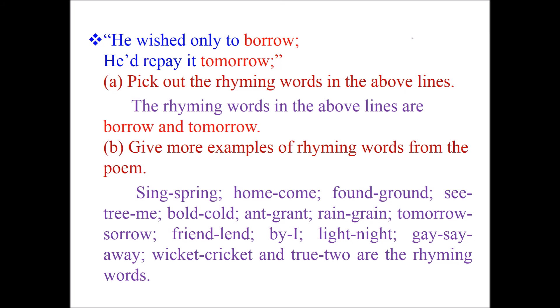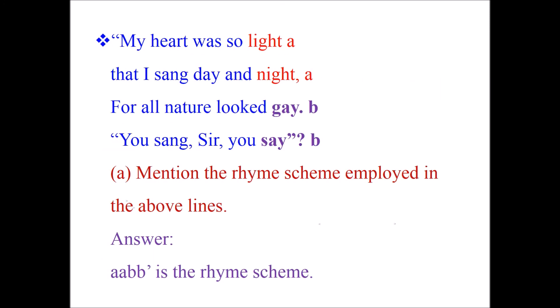Students, now let's read this stanza: 'My heart was so light, that I sang day and night, for all nature looked gay. You sang, sir, you say.' Now look at the question: mention the rhyme scheme employed in the given lines. The answer is: AABB is the rhyme scheme.